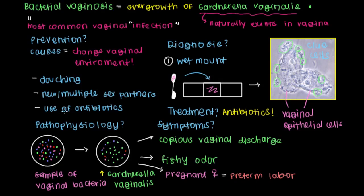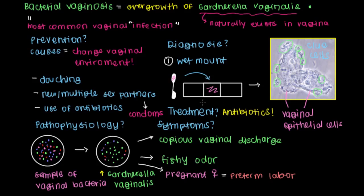That's a tougher question to answer because some things that cause BV — like using antibiotics to treat pneumonia — well, we have to use antibiotics to treat pneumonia. So the only prevention that's recommended is to use condoms when having new or multiple sex partners. Beyond that, what doctors usually do when a patient becomes symptomatic is just to treat with antibiotics.